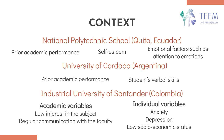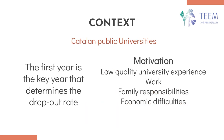Another example: in a study conducted in Colombia, the variables most related to dropout were low interest in the subject, irregular communication with the faculty, depression, and low socioeconomic status. In Catalan Public Universities, it concludes that the first year is the key year that determines the dropout rate, and that the variables most closely related are lack of motivation due to low quality of the university experience, work or family responsibilities, and economic difficulties. The AlphaGIA project concludes that, among all the factors, vocation is the most determining factor.